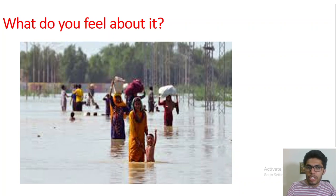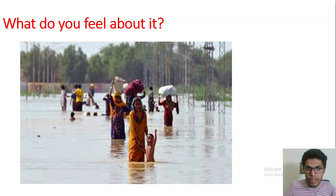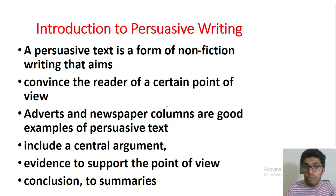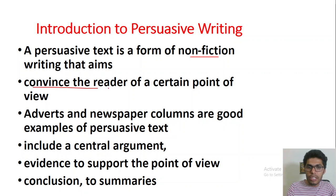Now, look at this picture and think about what is happening and why. Write about it in the comments or on paper. Whatever your feelings are — whether what is happening is right or wrong, and why — this is something related to persuasive writing. A persuasive text is a form of nonfiction writing that aims to convince the reader of a certain point of view. Advertisements and newspaper columns are good examples of persuasive writing.